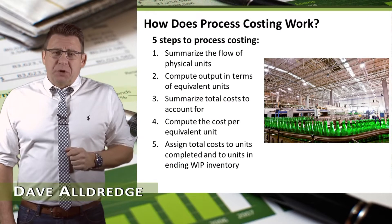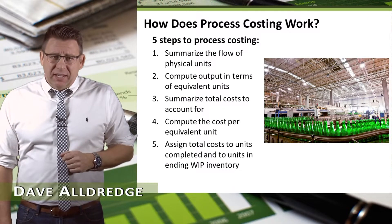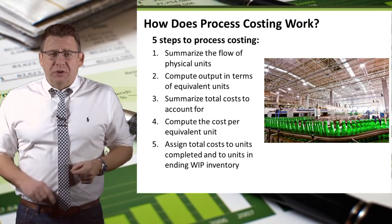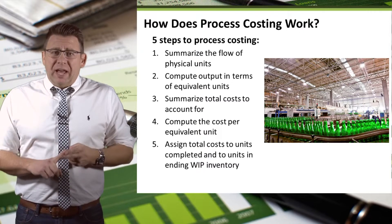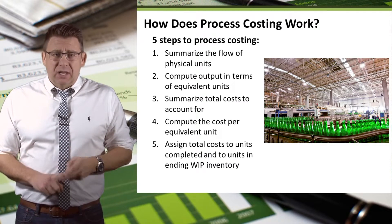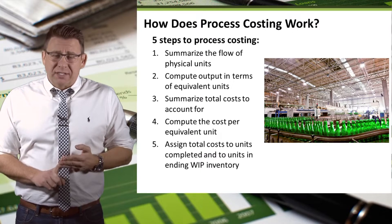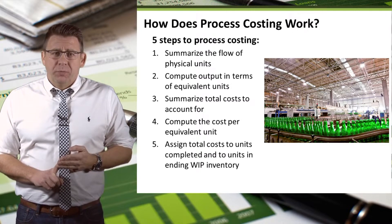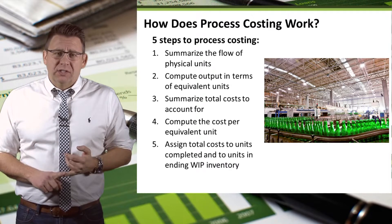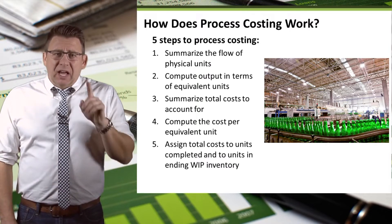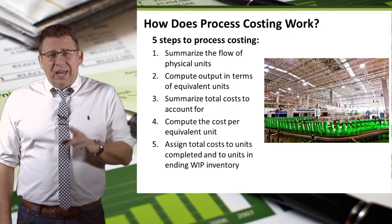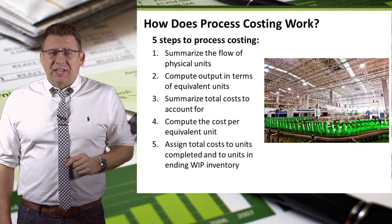There are five steps in process costing. They are: summarize the physical flow of units, compute output in terms of equivalent units, summarize total costs that need to be accounted for, compute the cost per equivalent unit, and finally, assign total cost to units completed and to units in ending inventory.